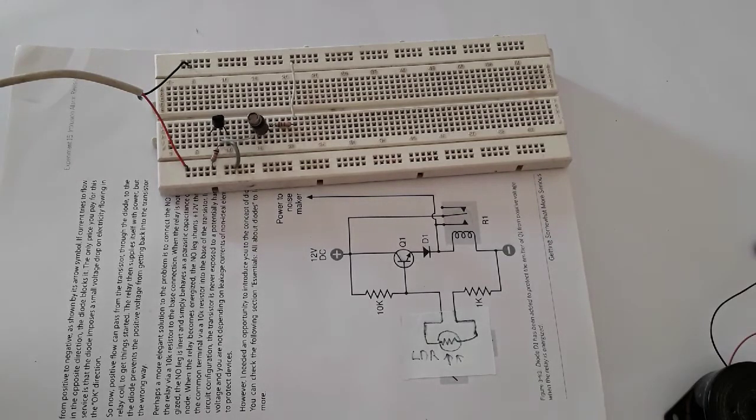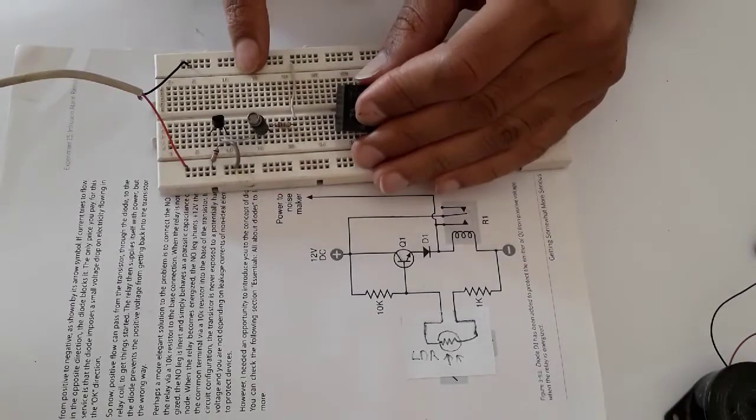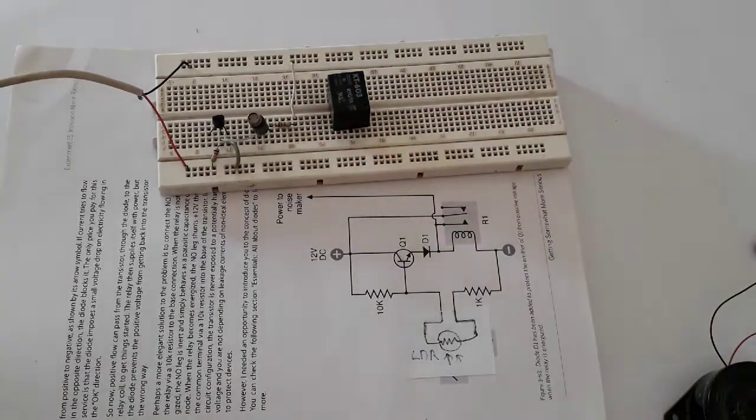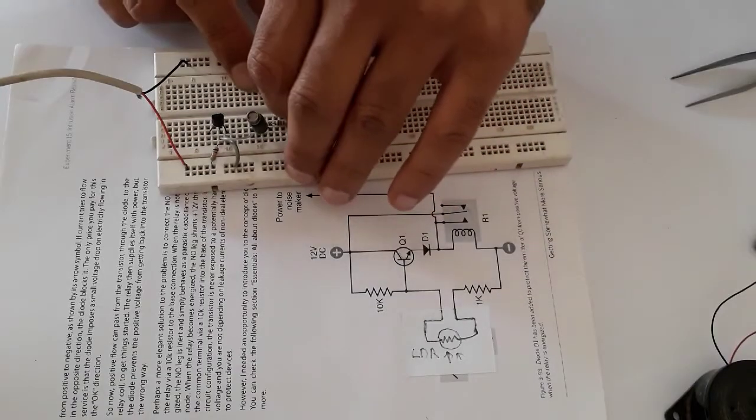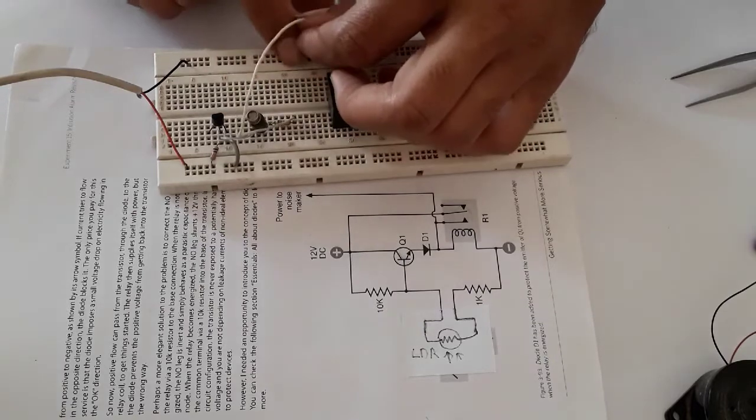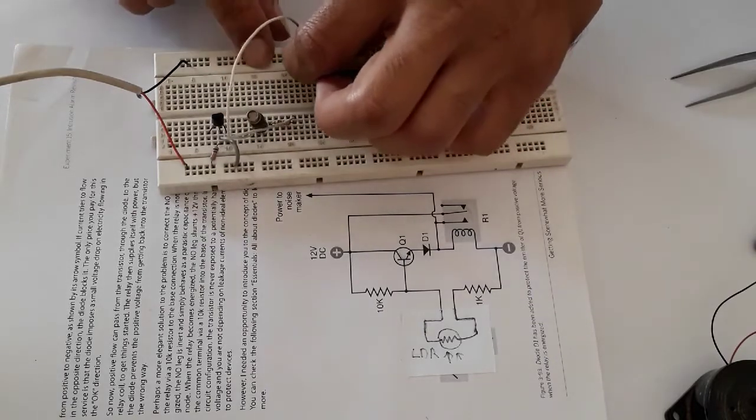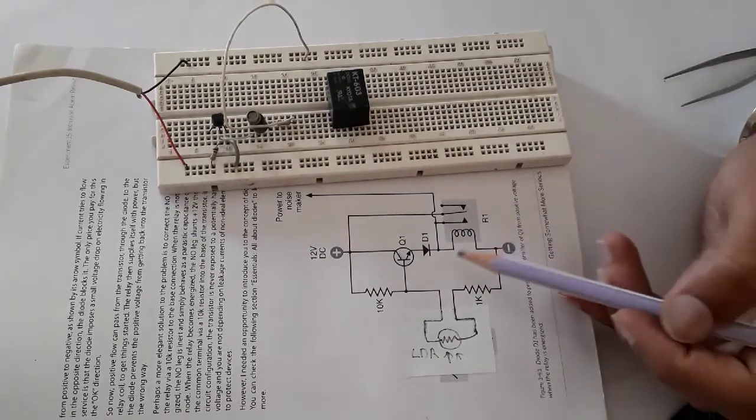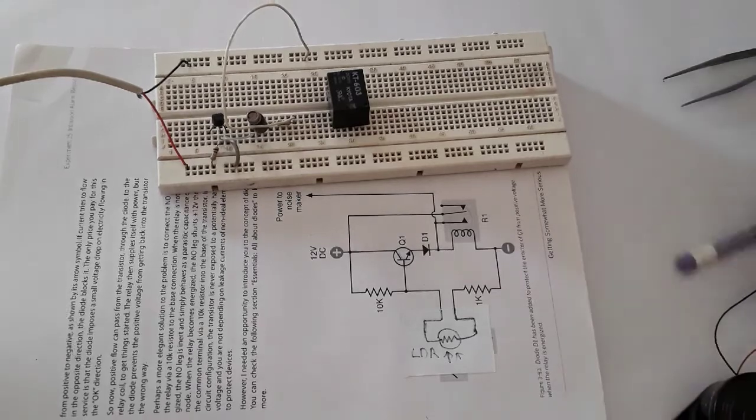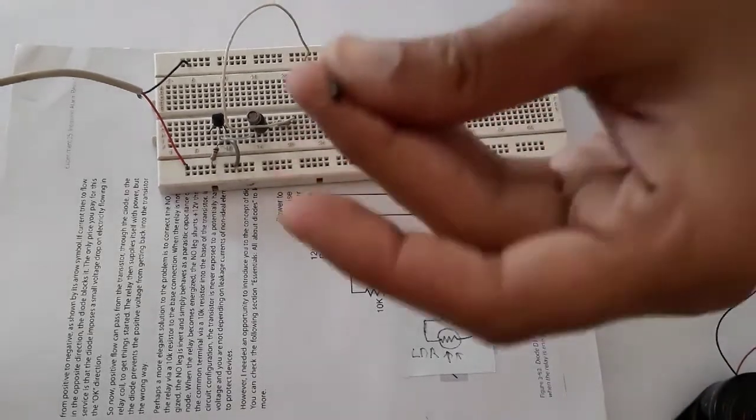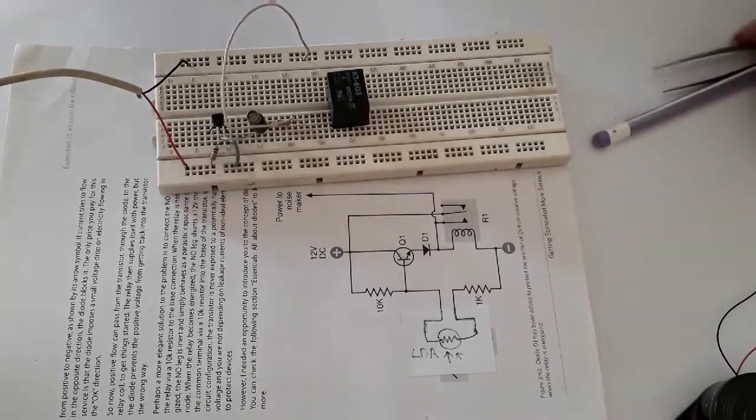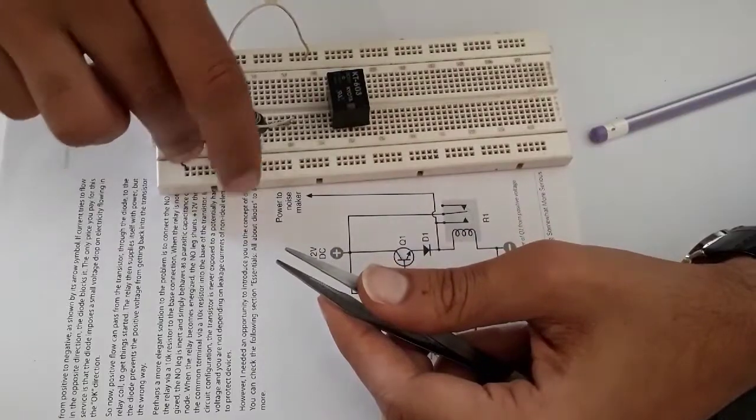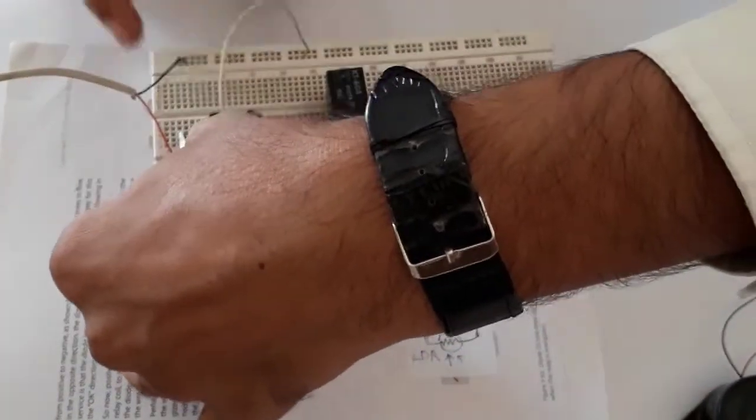Now we will arrange the relay. One of the pins of this relay's coil will be grounded, and the other one will be with this transistor, between the transistor and diode. Now we will arrange this diode between the emitter of the transistor and one arm of this coil.